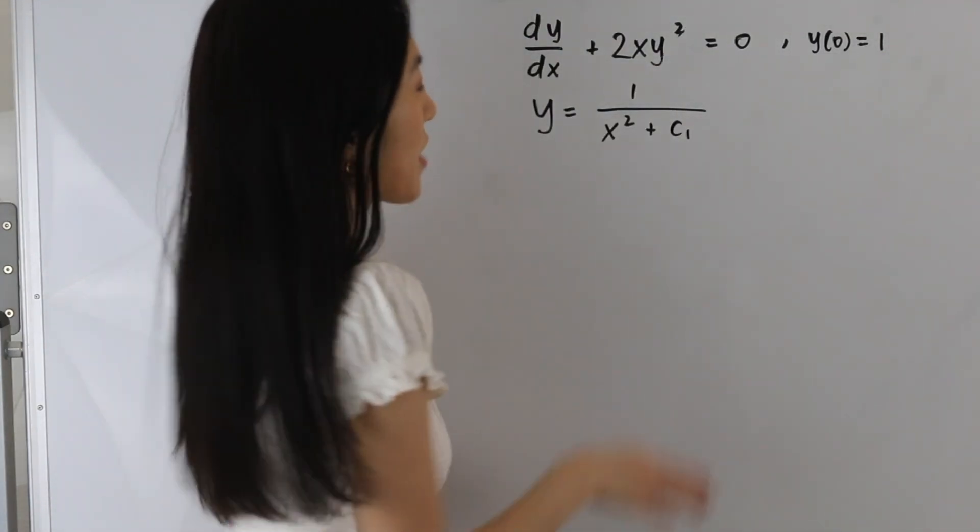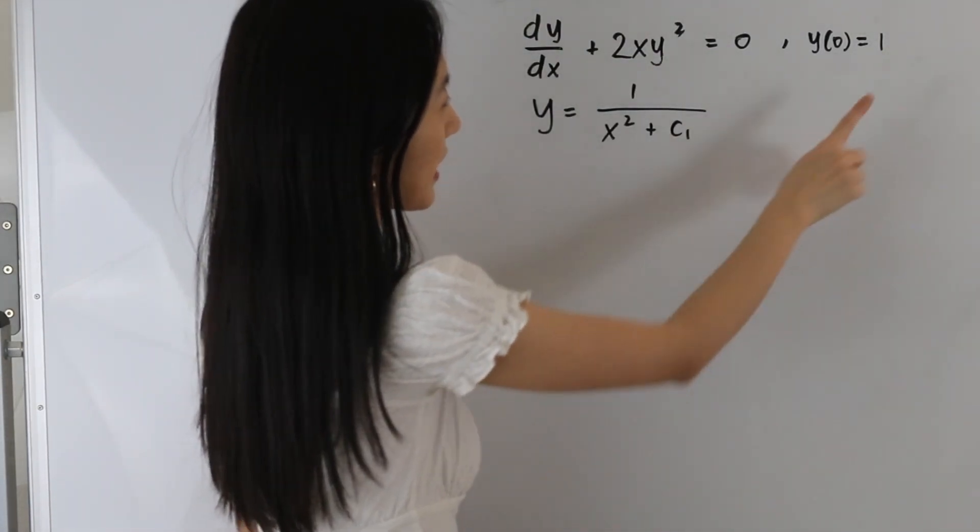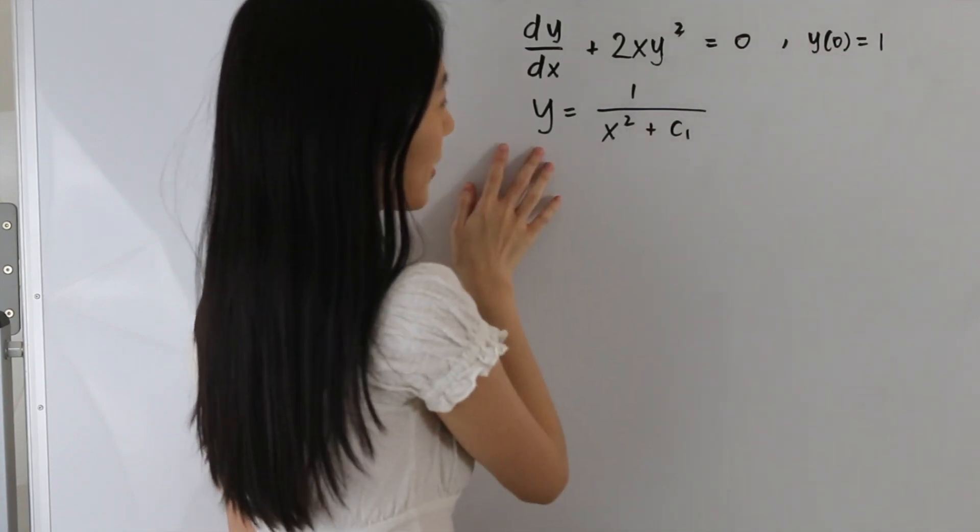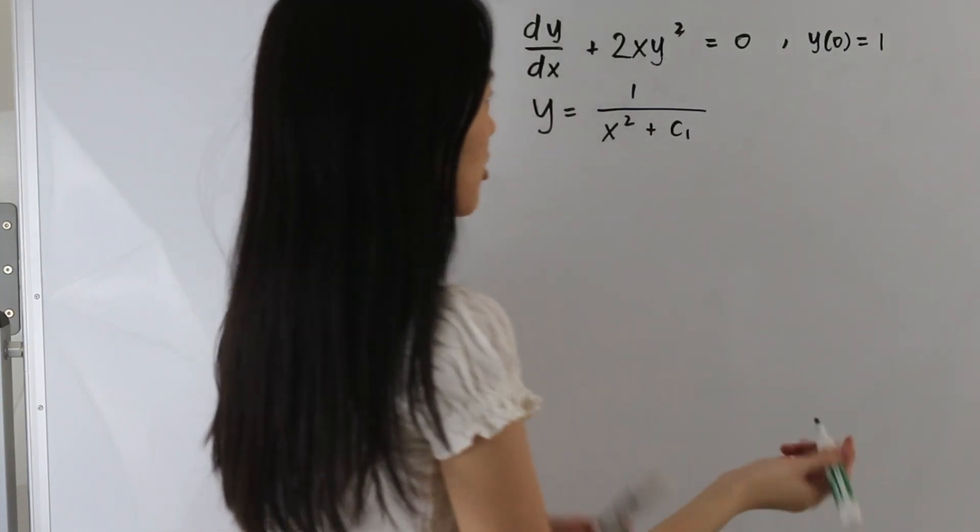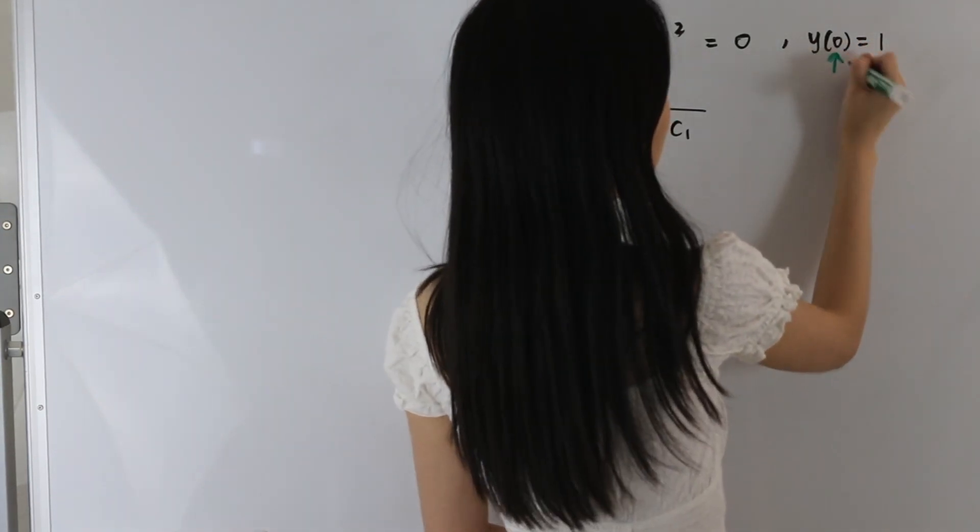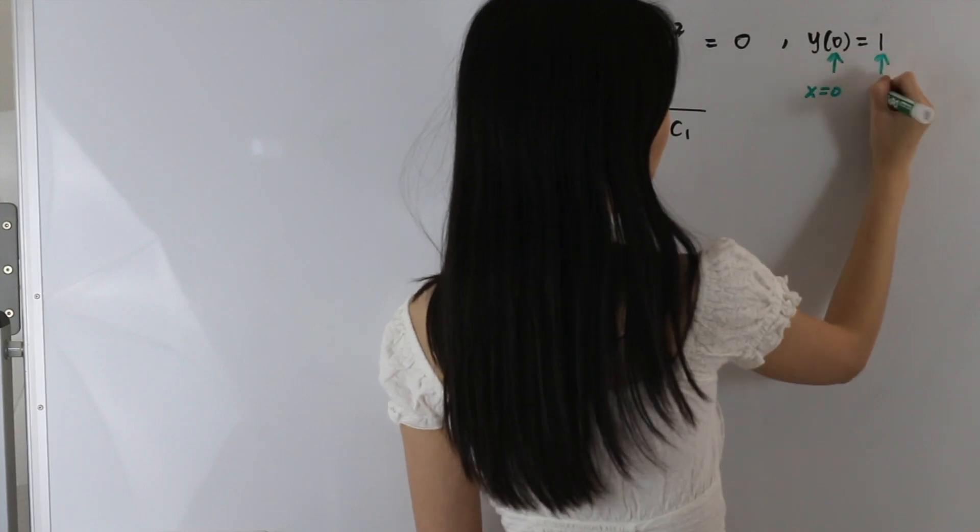Okay, so now we have our general solution, and we want to plug in our initial condition here into our equation so we can solve for our constant. And just a note, here x is equal to 0 and y is equal to 1.